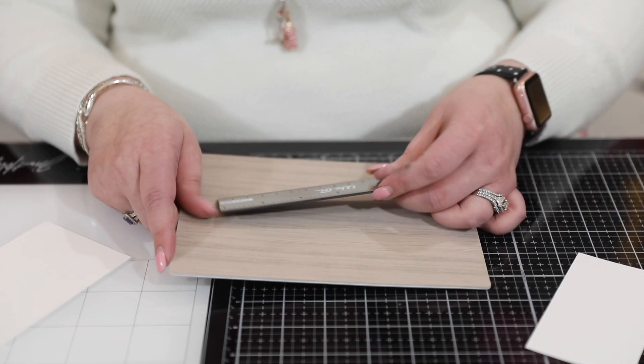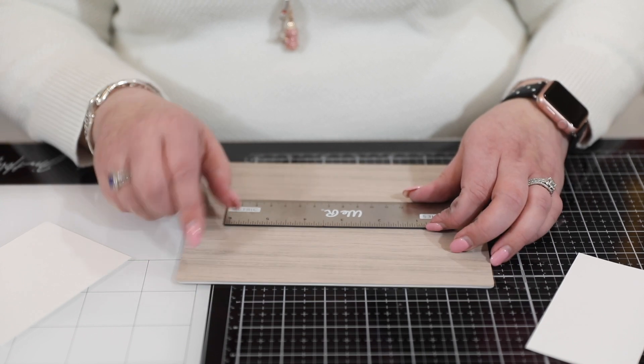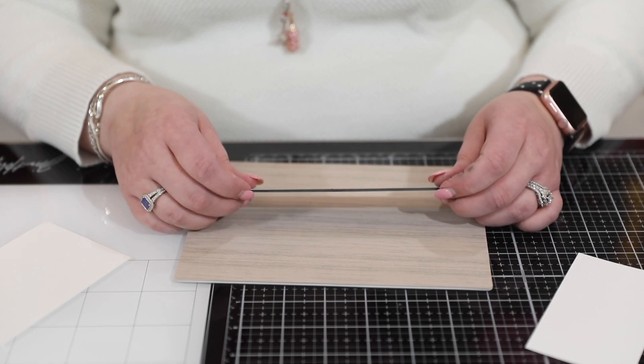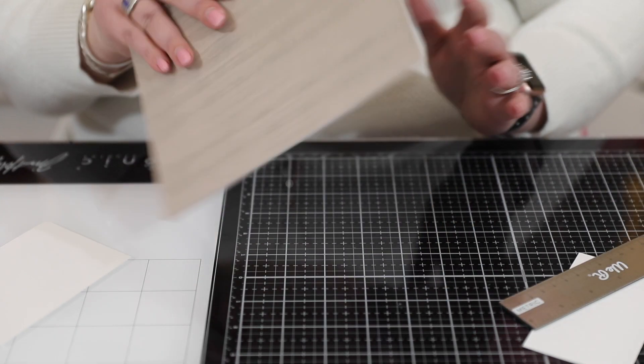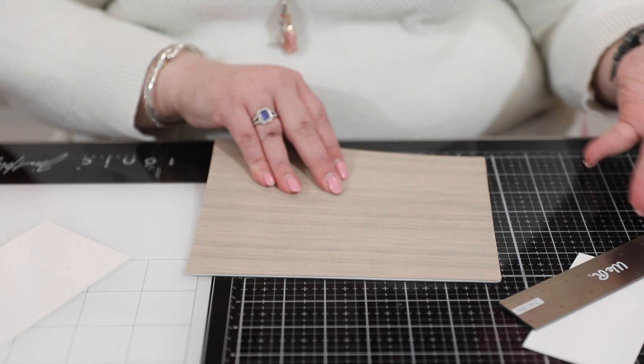You can also cut on the reverse side as well if you want to, and your ruler will also stick on the reverse side. So if you just wanted to cut something and it was a bit messy and you didn't want to get it on this side, you could get some mediums and things on this side and you're not going to ruin your grid either.